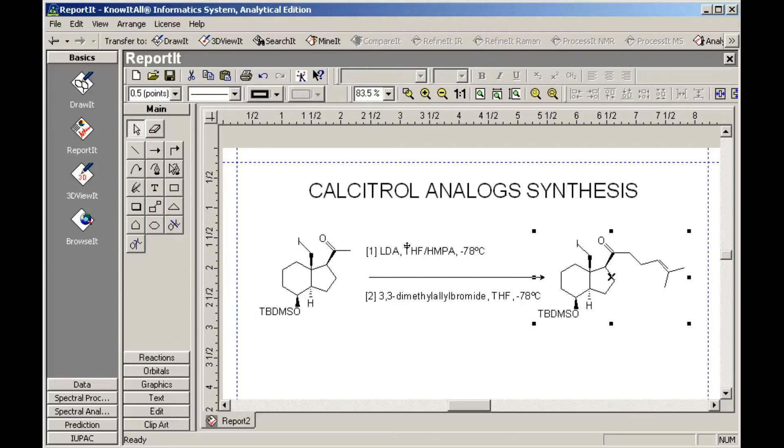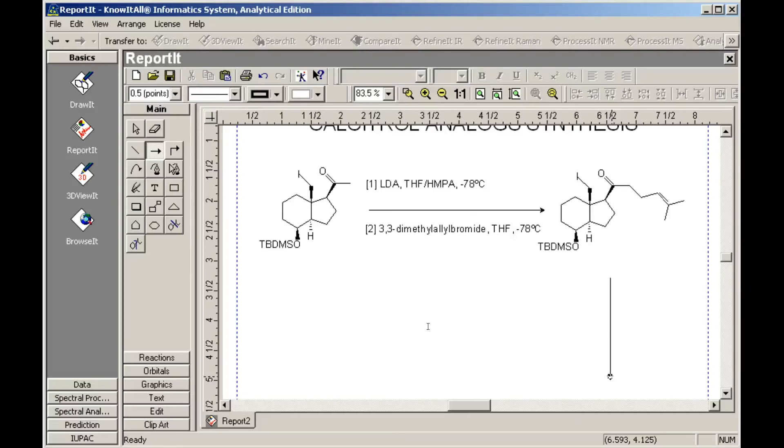Next, we'll add another reaction arrow. And another text box. Right-align the caption, then use the subscript tool to format the chemical formula.